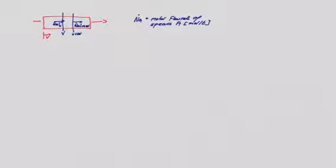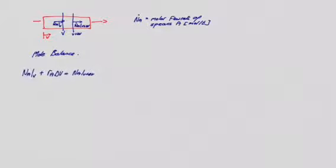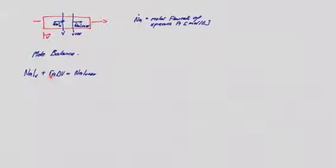Reactors, as we've said before, are basically just a mole balance. Doing a mole balance on A in that little element: the moles of A entering the element, N_A at V, plus the moles of A formed in that element — that's the rate times the size of the element delta V, giving moles formed per unit time — must equal at steady state the moles of A leaving, which is N_A at V plus delta V.